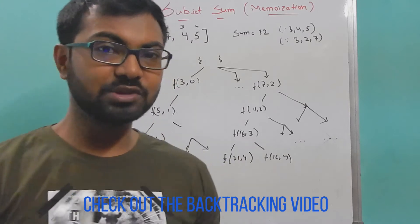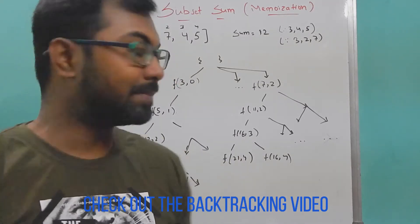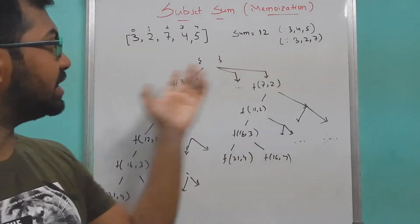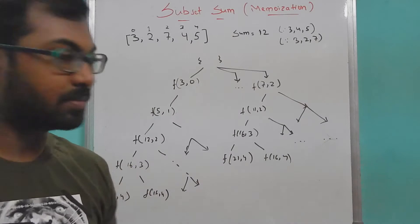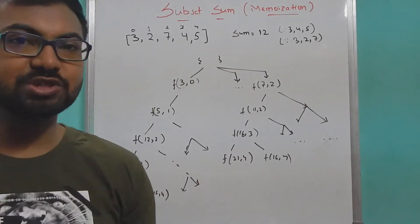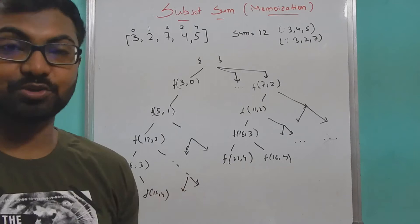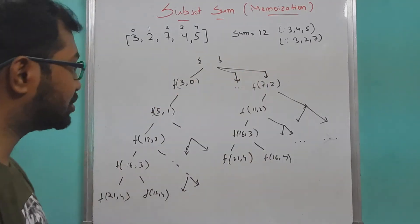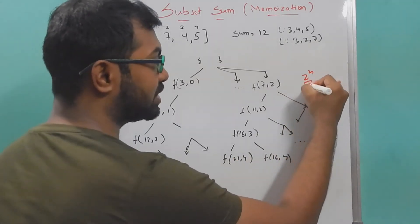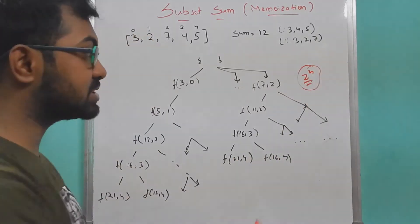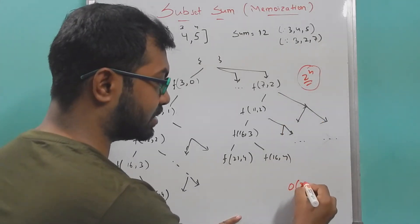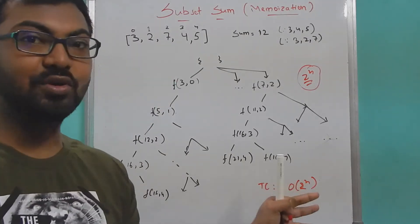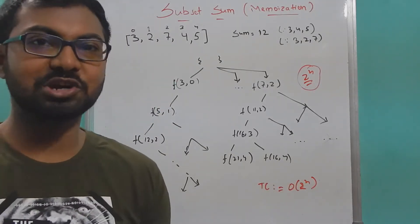Just to brief about the last video: given a subset and a sum, we have to find if there exists a subset whose sum equals the given sum. In the last approach we saw how we can either take an element or exclude an element - we have two choices. We draw the whole graph for it and the total 2 to the power n subsets leads us to O of 2 to the power n time complexity, and that's huge.